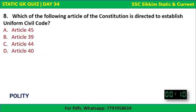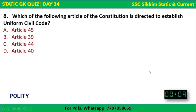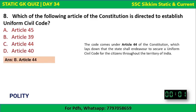Polity Question 3: Which article of the Constitution directs the establishment of a Uniform Civil Code? The correct answer is Article 44. Article 44 lays down that the state shall endeavor to secure a Uniform Civil Code for citizens throughout the territory of India. Till now, it has not been implemented, but there are indications it may be done soon.